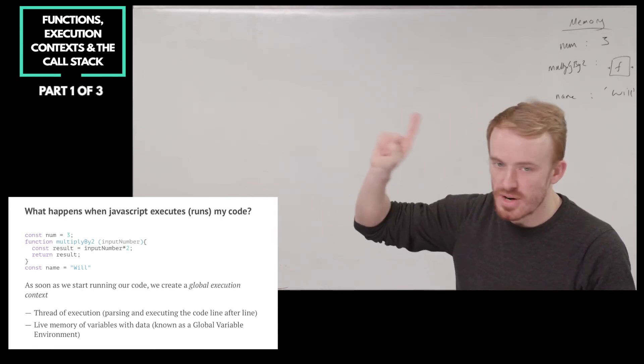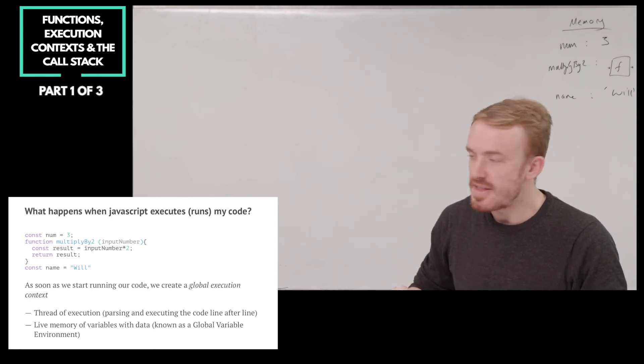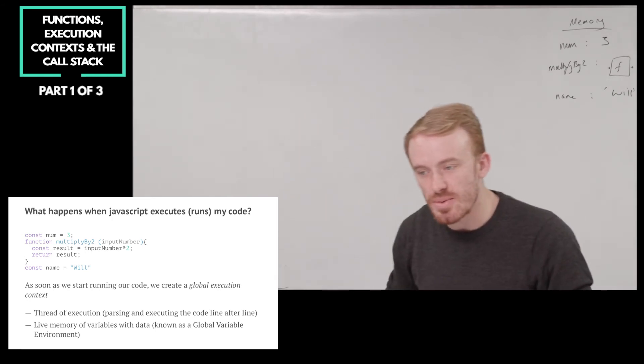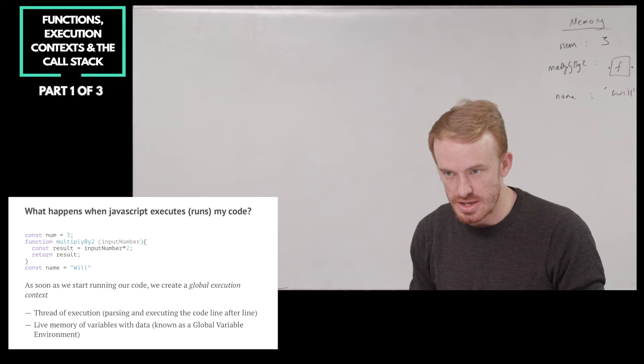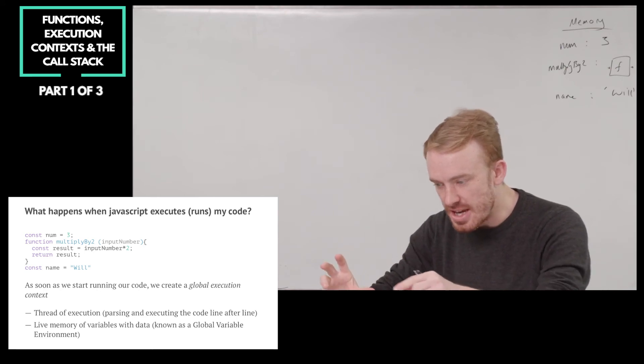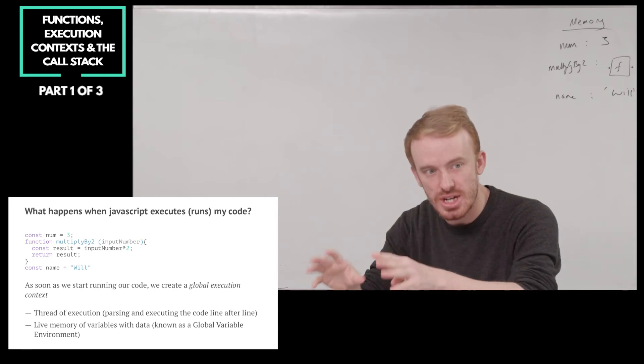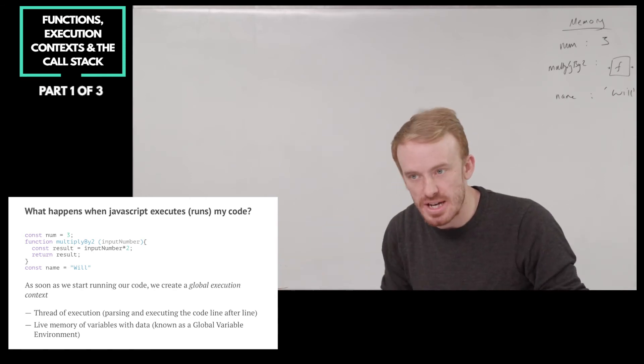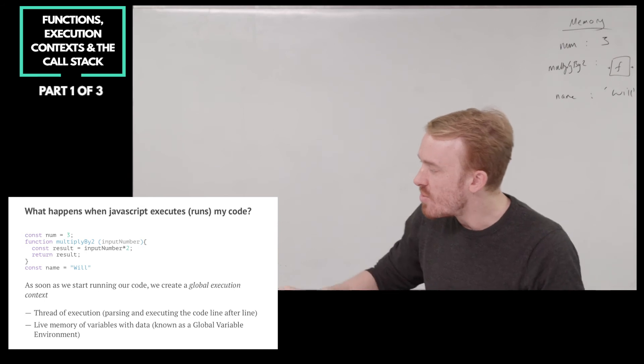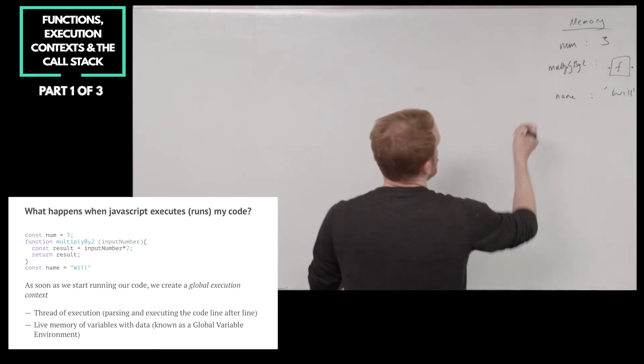And we start off as soon as we start running our code with a global one. We're going to see in a minute what's called a function-level execution context. When we start running a function, our thread weaves inside and starts running the code inside that function line by line. And we create a little memory just for the stuff inside that function. But for now, we're in the global execution context.